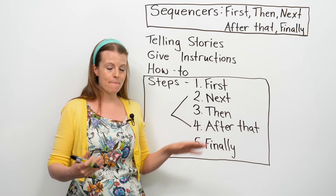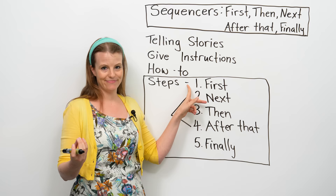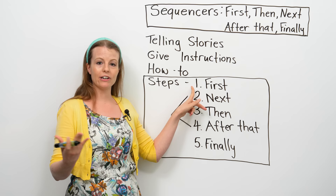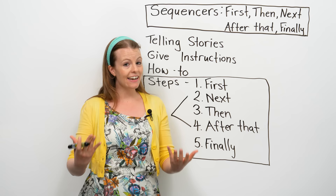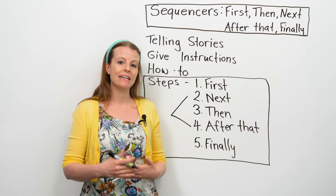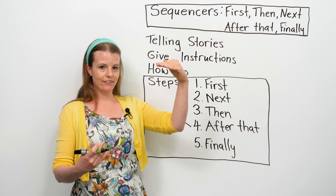When we're using sequencers, first always comes first. Notice first is number one — so when we're giving instructions or steps, this is how we would start. When we're ending our instructions, or at the end of a how-to, we end with the word finally. So first is the first thing you say, and finally is the last.